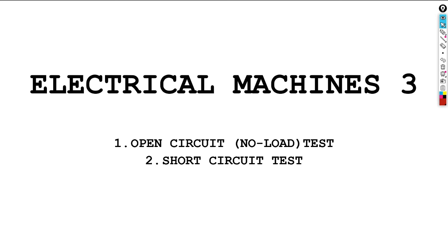From our previous video, we discussed the equivalent circuit, how to determine the losses — Rc, Xm — all those losses in our machine, and how to determine them referenced to the primary or the secondary, since those losses on the primary and secondary are considered on one side of the transformer.